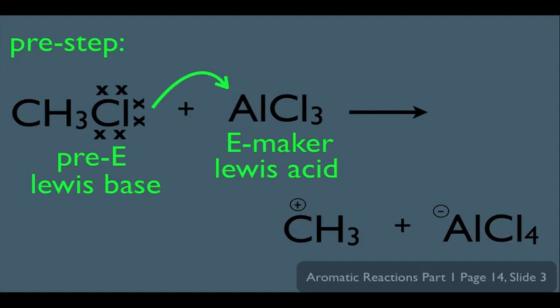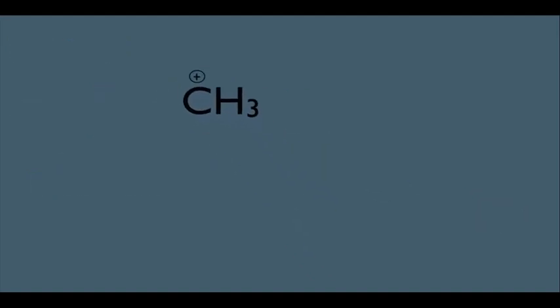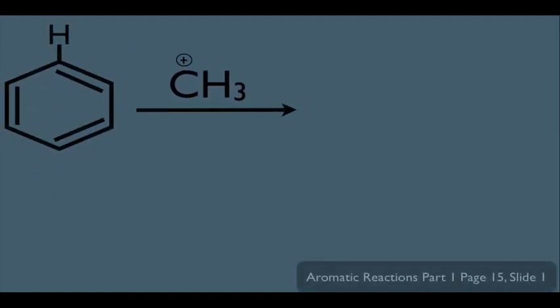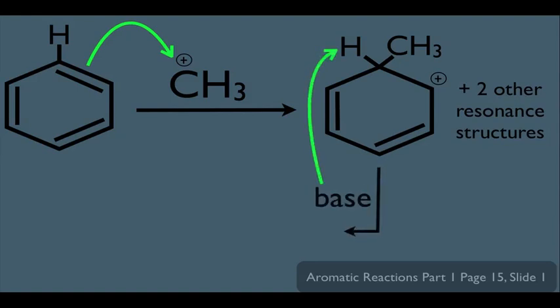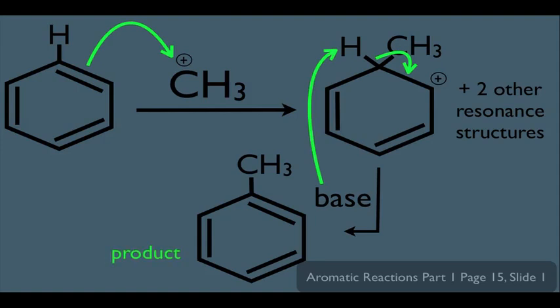Our carbocation here is our full-fledged electrophile. This particular carbocation — a methyl carbocation — is extremely unstable and reactive, which is simply why it's able to react with a super-stable molecule such as benzene. The mechanism is electrophilic aromatic substitution: the electrons grab this carbon, we end up with the arenium ion intermediate plus its two resonance structures, followed by a base abstracting the hydrogen. The electrons fall down, regenerating the aromatic ring, and this is our product — we've alkylated the benzene ring.